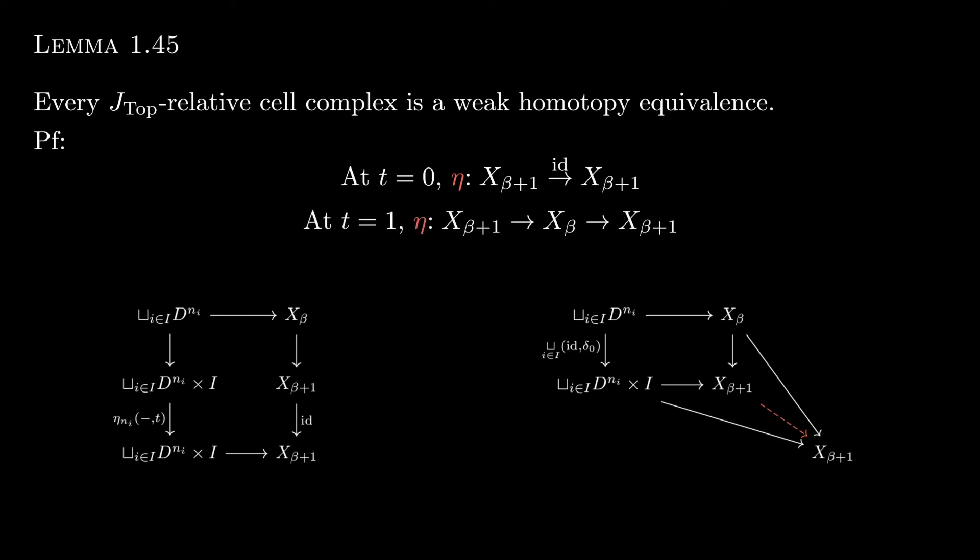At time equals 1, eta-n-i is remember the map that first does the projection and then the inclusion. And so what does this mean for that red diagonal map? Well remember that this is a J-top relative cell complex, so X-beta plus 1 is obtained from X-beta by erecting cylinders over all the D-n-i. So when we project and then do the inclusion with respect to eta-n-i, that diagonal map from D-n-i cross I to X-beta plus 1 is effectively forgetting everything about the cylinder and just considering D-n-i, right? Because we're projecting and then including, as opposed to the horizontal map which doesn't do that. So that red map somehow needs to do the same thing of projecting and then including. But like we just said, J-top relative cell complex erecting cylinders over the D-n-i, and so we can just define the red map to be one that projects onto X-beta, effectively forgetting about that cylinder part, and then including back in X-beta plus 1.